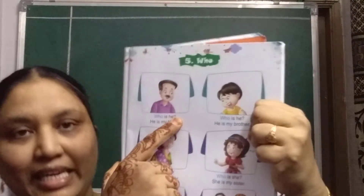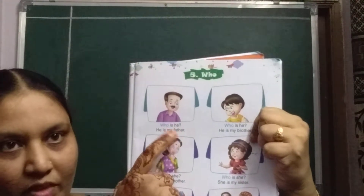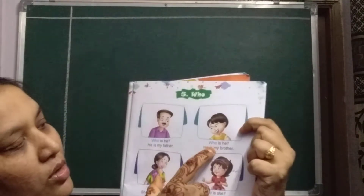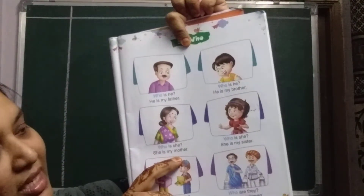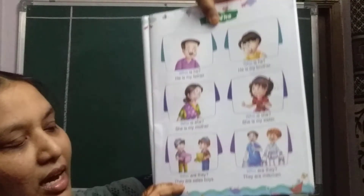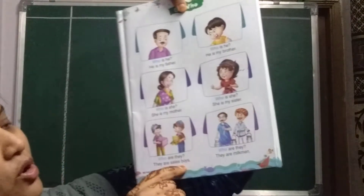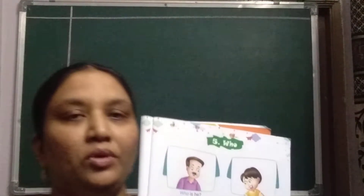Let's look at the examples: 'Who is he?' — questioning — 'He is my father.' 'Who is he? He is my brother.' 'Who is she? She is my mother.' 'Who is she? She is my sister.' 'Who are they? They are sales boys.' 'Who are they? They are milkmen.' So 'who' is used to ask a question. We will write a few questions and answers in a notebook today.